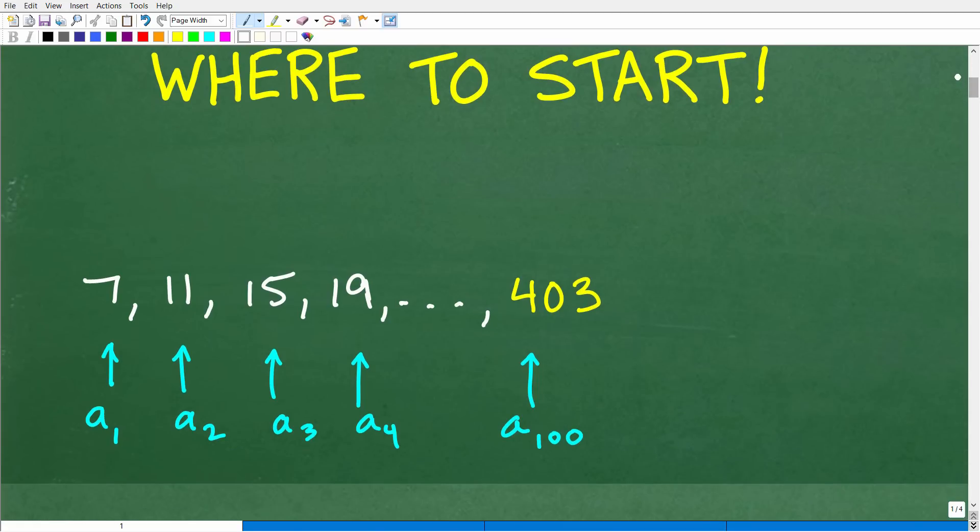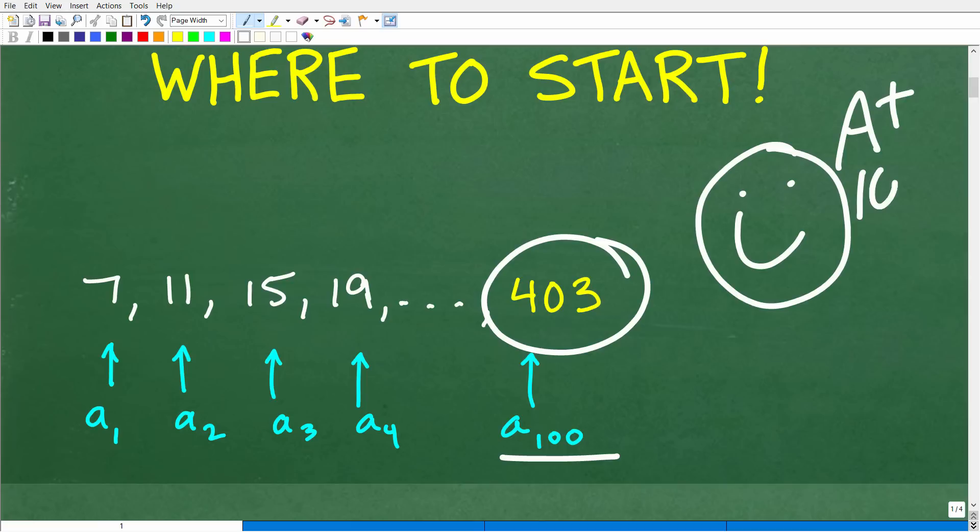The correct answer is 403. That is the value of the 100th term of this sequence of numbers. Now, if you got this right, that is very good. Matter of fact, I have to give you a nice little happy face. It's an A plus, a 100%, and multiple stars. So you could brag to your friends and family that, indeed, you are a certified professional expert in the area of arithmetic sequences. And that's what we're talking about here. This is called an arithmetic sequence.